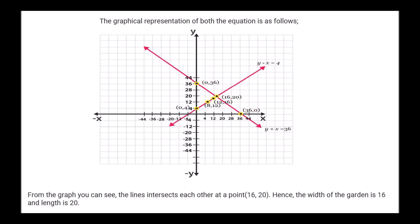This is the graphical representation of the given question. From the above graph, we can see that the lines intersect each other at point (16, 20). Hence the width of the garden is 16 and the length is 20.